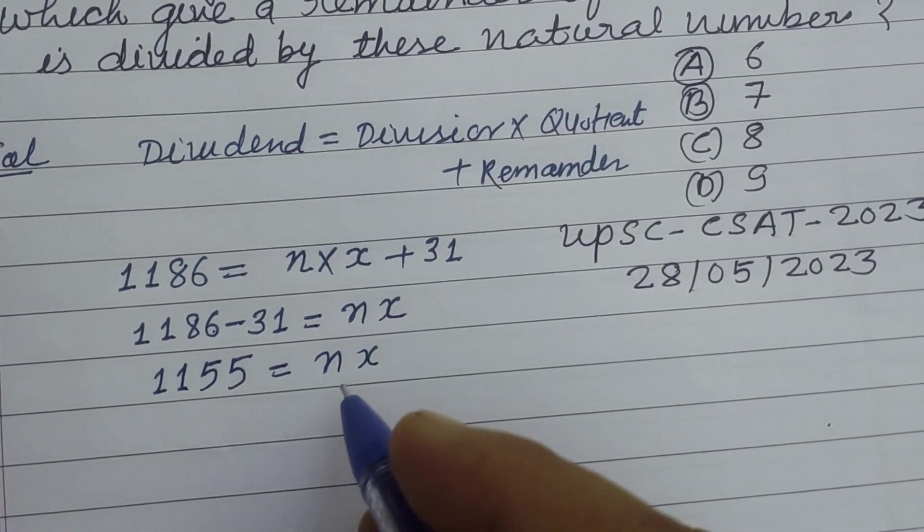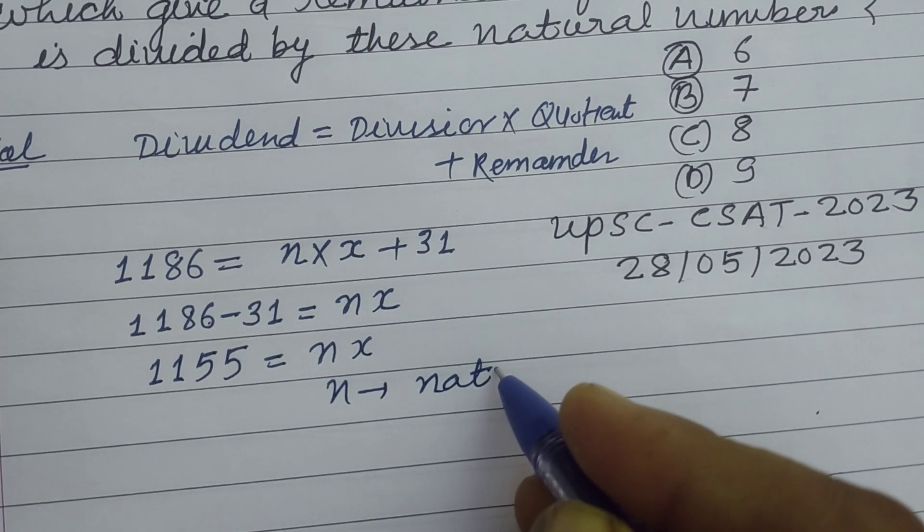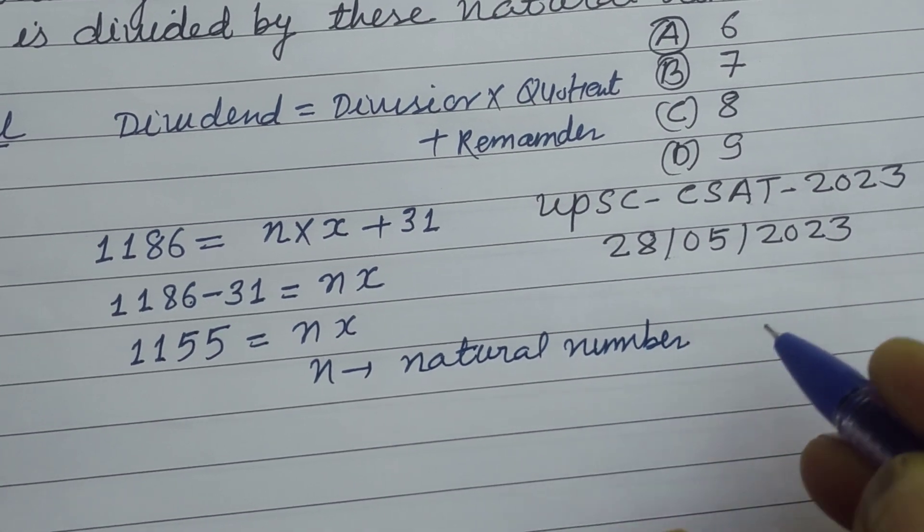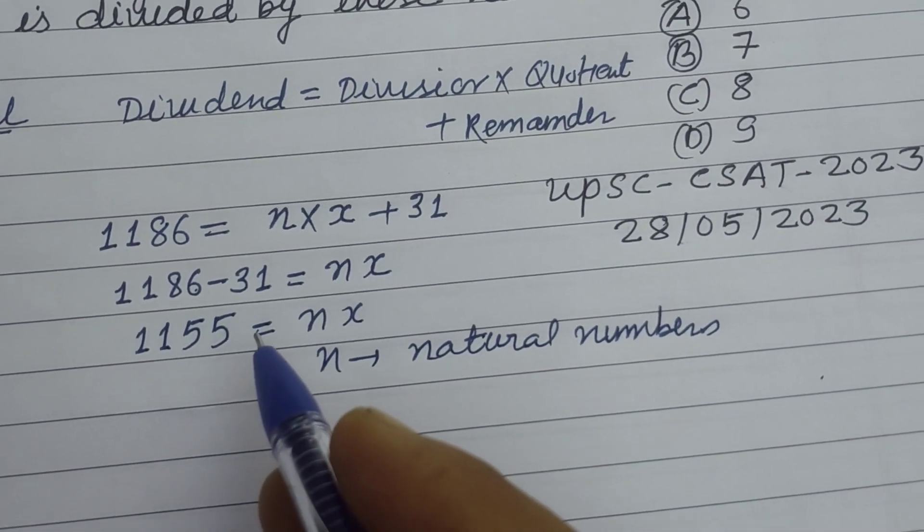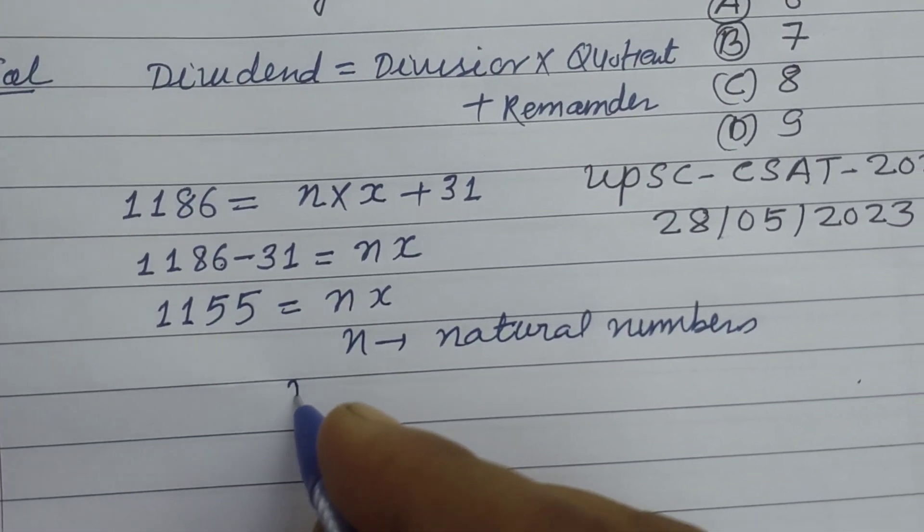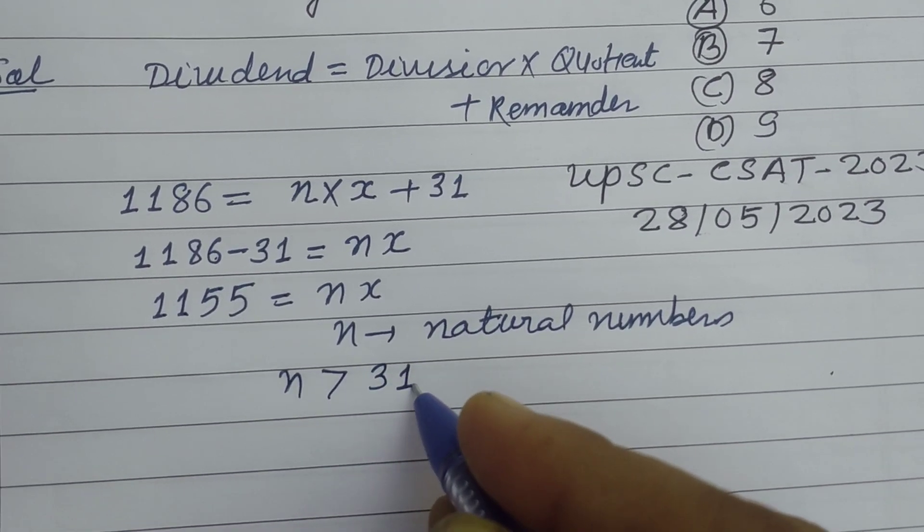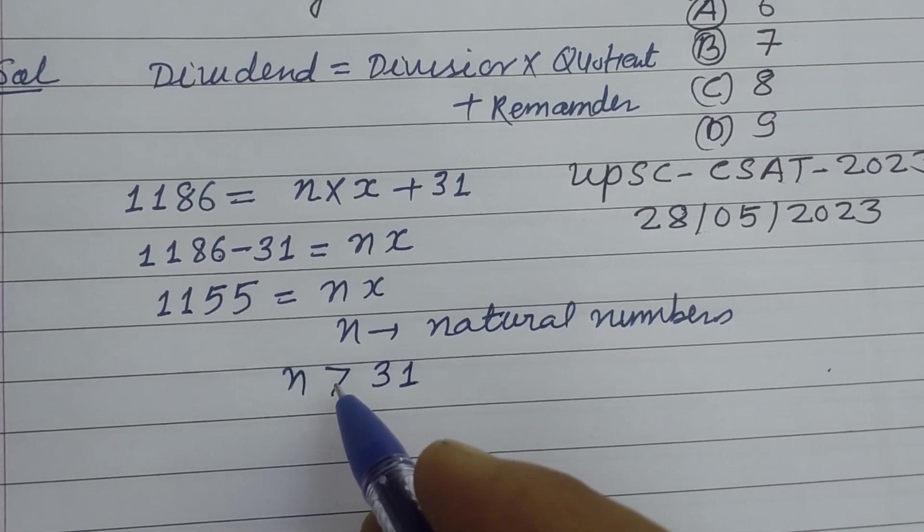Here N is a natural number that divides 1155. N is greater than 31 because the remainder is 31, so we take the numbers greater than 31.